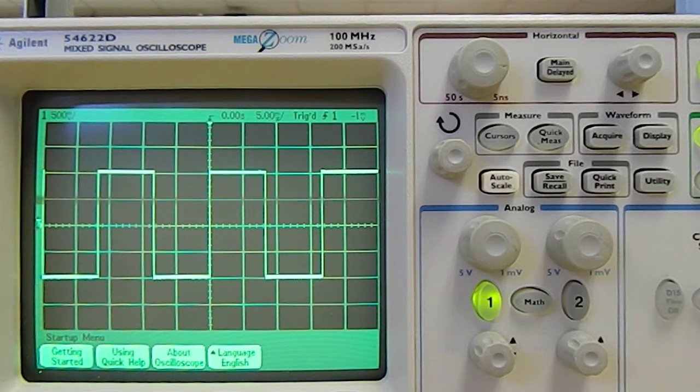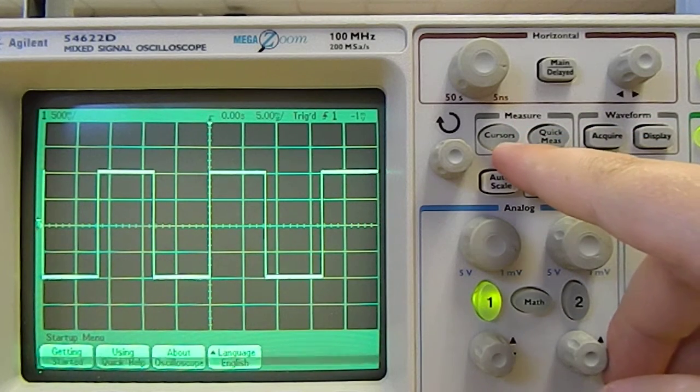Okay, so how do we go about doing this? Well, we start by clicking under Measure. It says Cursors.